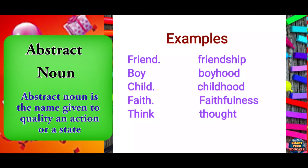Take the word 'friend' — we are able to see our friend, we are able to touch our friend. But we cannot see or touch his friendship. Similarly, like that boy — we are able to see and touch the boy, but we cannot touch or see the boyhood.